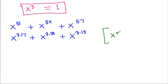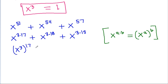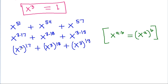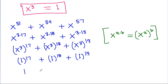We can rewrite each term using x cubed equals 1. So x power 51 is x power 3 to the power 17, x power 54 is x power 3 to the power 18, and x power 57 is x power 3 to the power 19. Since x cubed equals 1, this becomes 1 power 17 plus 1 power 18 plus 1 power 19, which is 1 plus 1 plus 1, that equals 3.